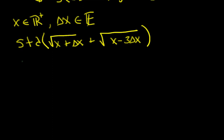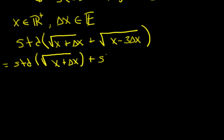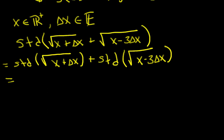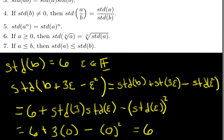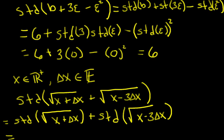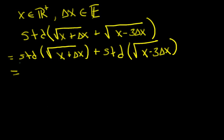We want to know the standard part of this. As we saw in the theorem, the standard part distributes across addition. So this is the standard part of the square root of x plus delta x, plus the standard part of the square root of x minus 3 delta x. From the theorem, as long as we're positive — which is a requirement — the standard part will distribute across roots. So this is the square root of the standard part of x plus delta x.